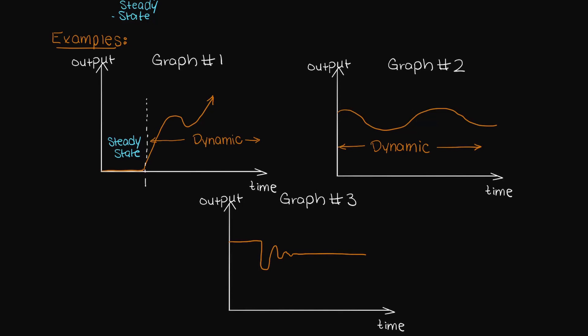Lastly, let's take a look at graph number three. If you find it easier on these types of graphs, you can denote where important changes occur, and this will help you visually dissect each region. Since region one and three have no fluctuations they are both steady state, whereas in region two there are oscillations occurring, so this region is dynamic.